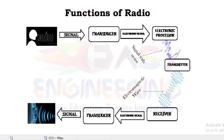We can see here the block diagram of functions of a traditional radio. The first block is a human being, with a sound waveform produced. We can consider this block as the information source. When we are talking or speaking, we are trying to convey information — that is the source of information. Once we are talking, the information source produces what we call a sound signal.